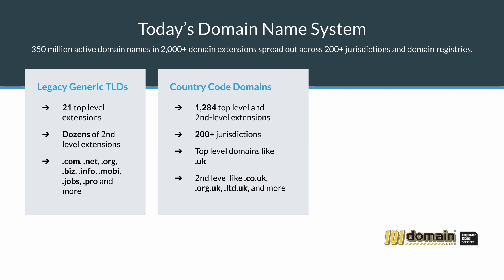Not only are there 200 country code top-level domains, but over a thousand more when you count the sub-extensions. At our count, there are 1,284 options for country codes.